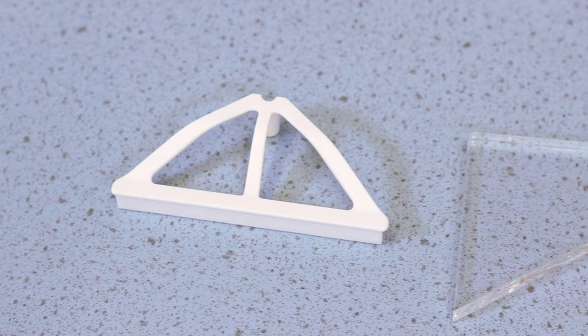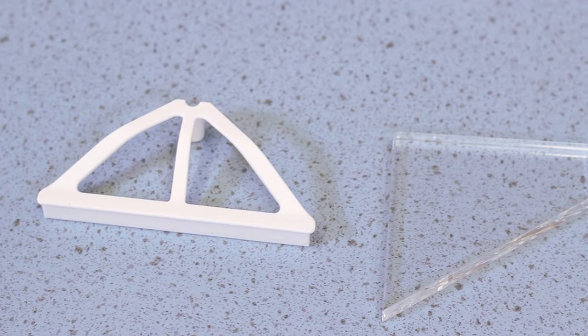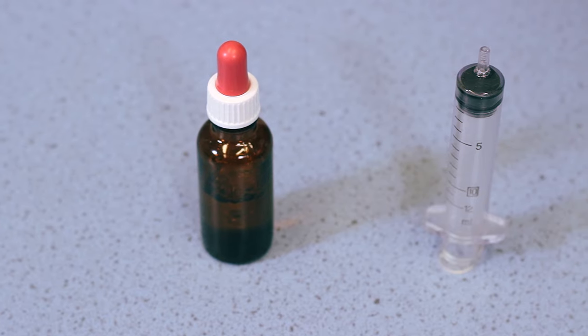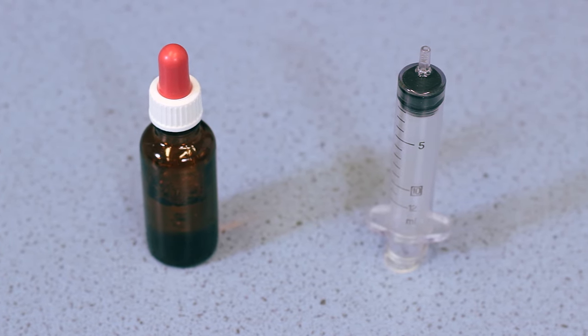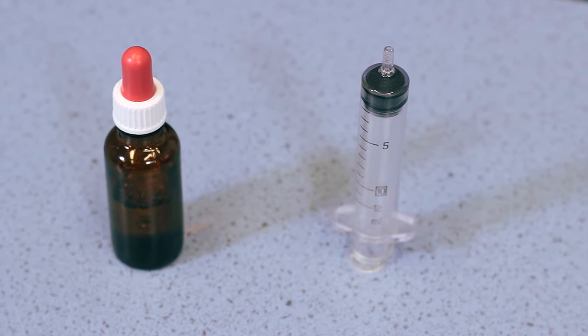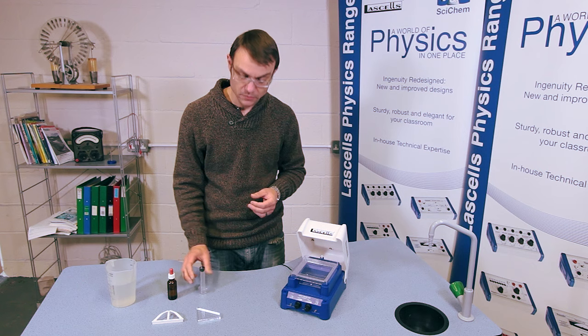From the tank we're going to use the angled refractor, the plain dipper, and in addition to that we're going to use some surfactant—this is plain old washing up liquid—and we're going to use a small syringe.